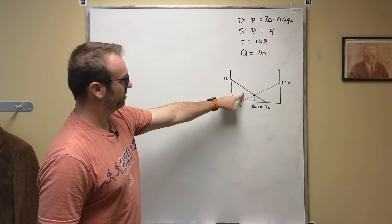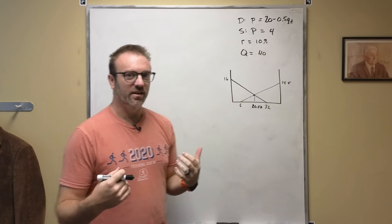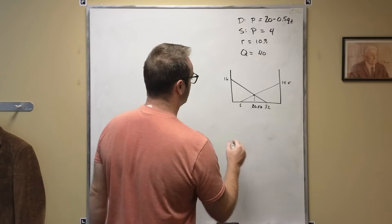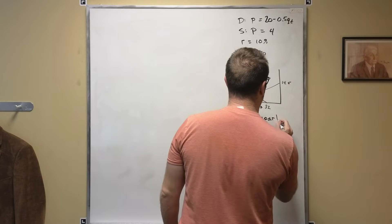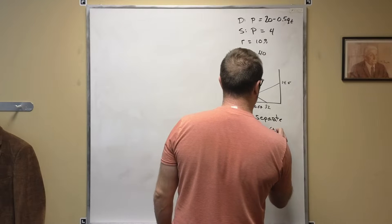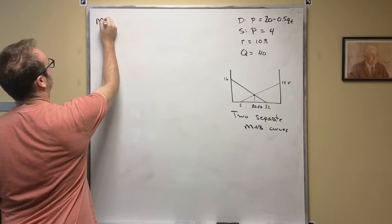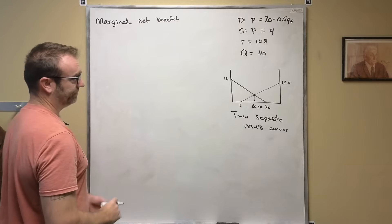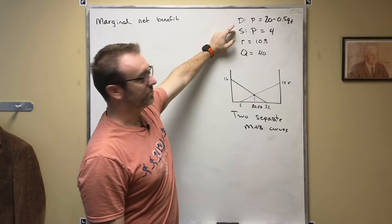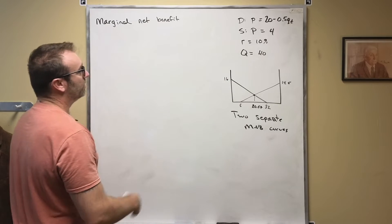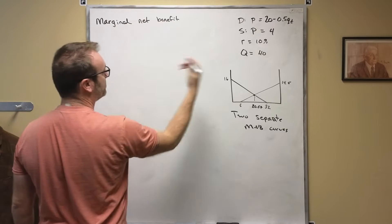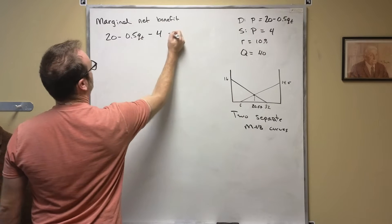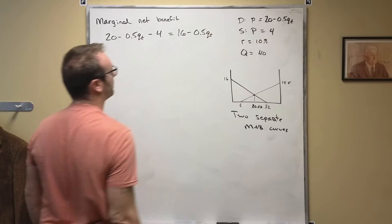I also want to explain this picture a little bit and show you where it comes from. What this picture really is, is two separate marginal net benefit curves, which we just call MNB curves. The marginal net benefit is the net benefit of each additional unit. To calculate that, all we're going to do is take the marginal benefit — given by the demand curve — and subtract the marginal cost, which is given by the supply curve. You end up with what we refer to as the marginal net benefit.